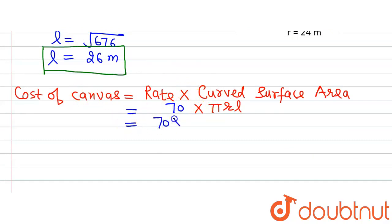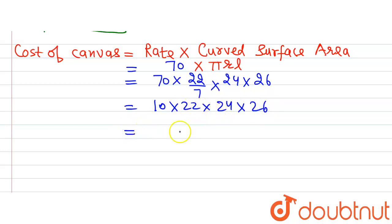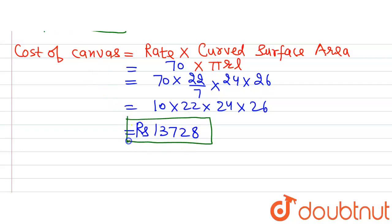So the cost of canvas equals 70 multiplied by π r l. Putting in the values: 70 × (22/7) × 24 × 26. Simplifying, 70 divided by 7 gives 10, so we get 10 × 22 × 24 × 26, which equals Rs. 13,728. This is the cost of canvas required to make the conical tent of the given dimensions.